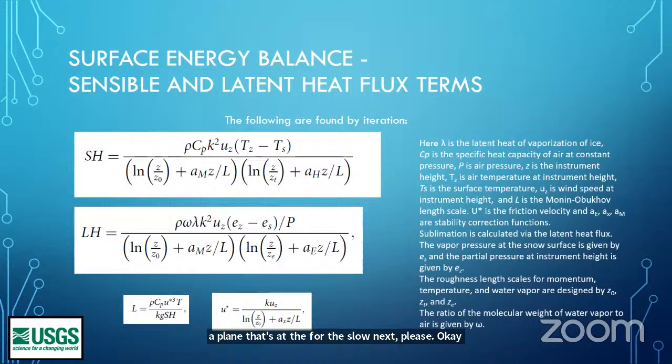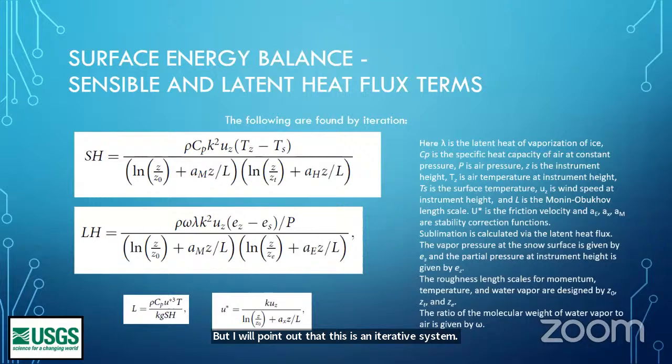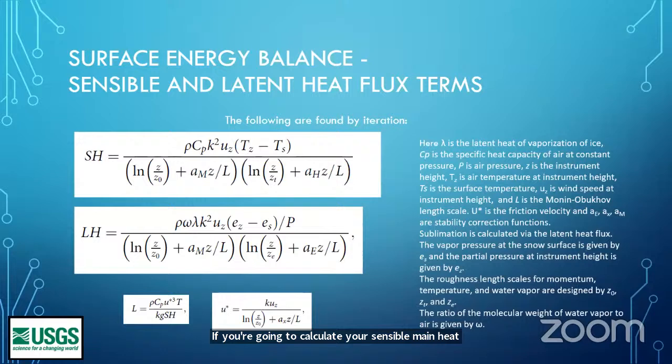The standard way of calculating sensible heat and latent heat is using the Monin-Obukhov similarity theory — several people at this conference are very well familiar with that. I'll point out that this is an iterative system: sensible heat SH, latent heat LH, and U-star are calculated in an iterative manner. I put this up here to show what types of terms you need from measurements if you're going to calculate your sensible and latent heat.